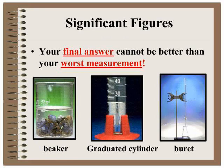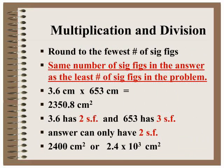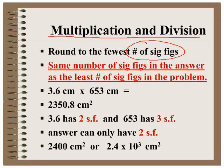Your final answer when you are performing mathematical operations — such as multiplying, dividing, adding, and subtracting — cannot be better than your worst measurement. To decide your worst measurement, you look at the number of significant figures. When multiplying and dividing, you need to round your answer to the fewest number of significant figures. You look at the numbers in your mathematical operation, pick the one with the least number of significant figures, and your answer must contain that many significant figures.